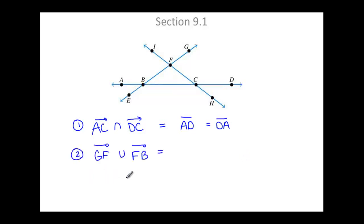For our second example, we're going to look at the union of a half open line segment GF and a half open line segment FB. G and F would be the end points of the half open line segment. However, F is not going to be included. We'll have an open circle.